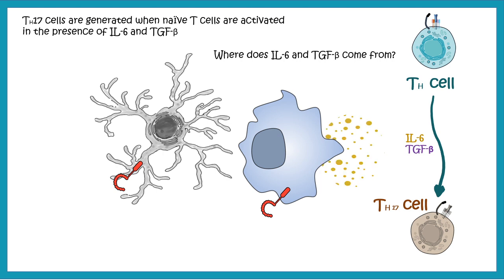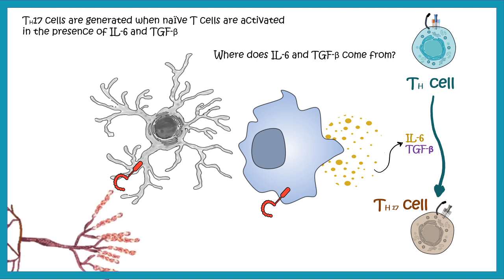When does a macrophage or dendritic cell secrete these cytokines? It is simply when a macrophage or dendritic cell encounters fungal proteins and recognizes them with the help of a toll-like receptor, which is a pattern recognition receptor. This toll-like receptor helps to identify fungal proteins and thereby leads to activatory signals, which further leads to the production of IL-6 and TGF-beta — the key cytokines for TH17 cell differentiation.